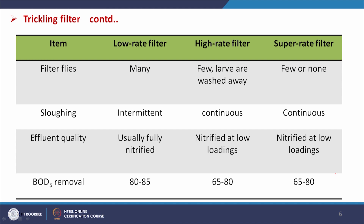Filter media for low rate is rock slag; for high rate it is rock slag or synthetic materials; and for super rate, only synthetic materials. Filter flies: many flies exist in low rate filters, but few larvae are washed away in high rate filters, and few or none in super rate due to the very high flow loading. Sloughing is intermittent for low rate and continuous for high and super rate filters. Effluent quality is usually fully nitrified for low rate. BOD5 removal is 80 to 85 percent for low rate and 65 to 80 percent for high and super rate filters.